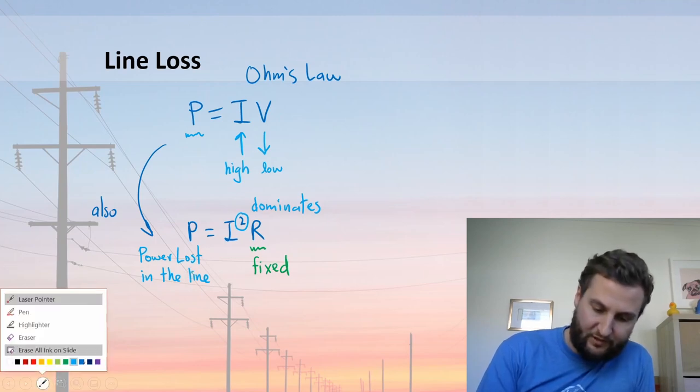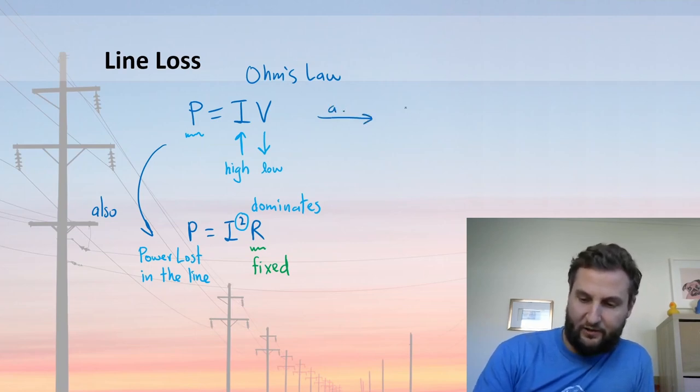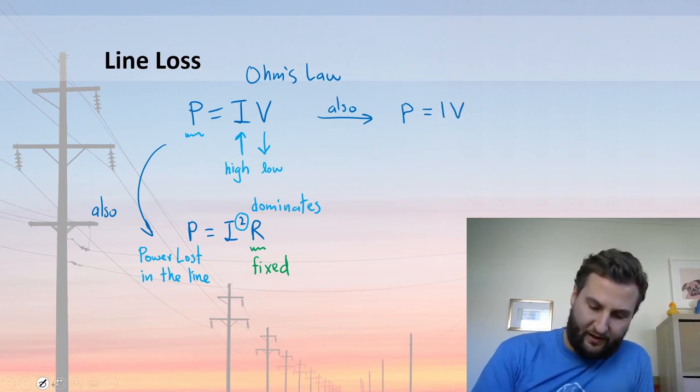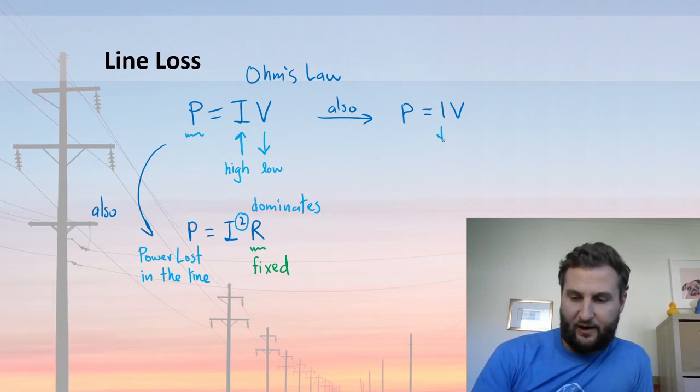So if we need current to be reduced, we have another scenario from Ohm's law. So again, P equals current times voltage. Well, now we can have a low current and a high voltage, and we can deliver the same power.